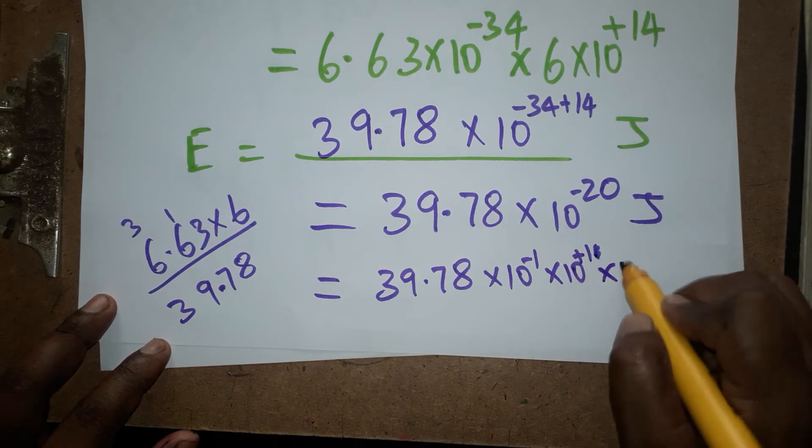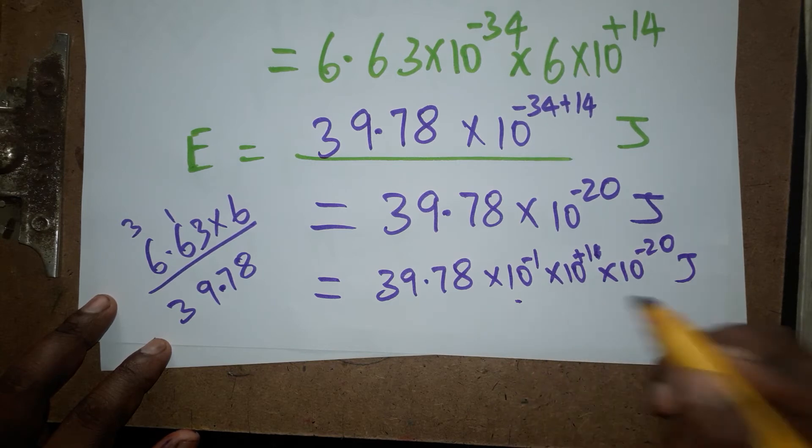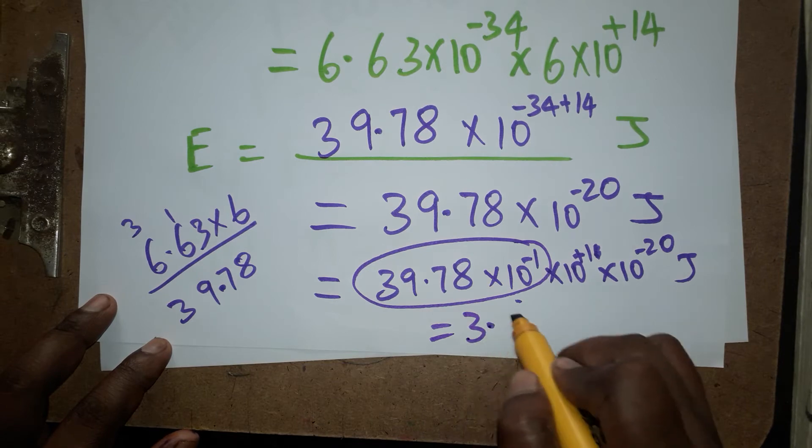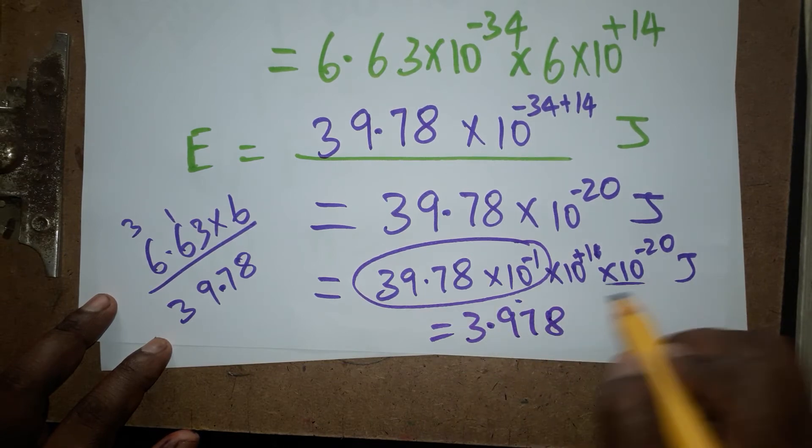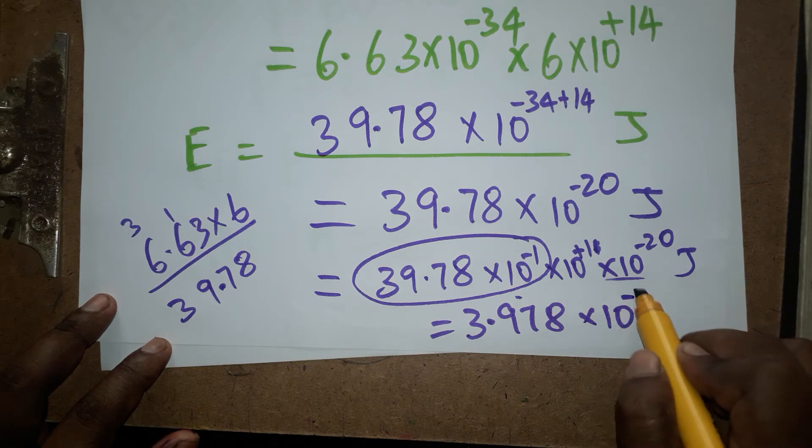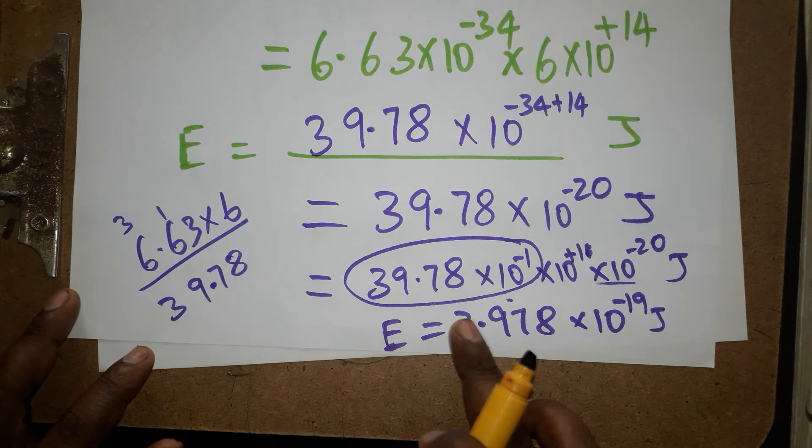You can include 10 power plus 1 into 10 power minus 20 joules. This together I will get 3.978, and together minus 20 plus 1 equals minus 19 joules. So energy is 3.978 into 10 power minus 19 joules.